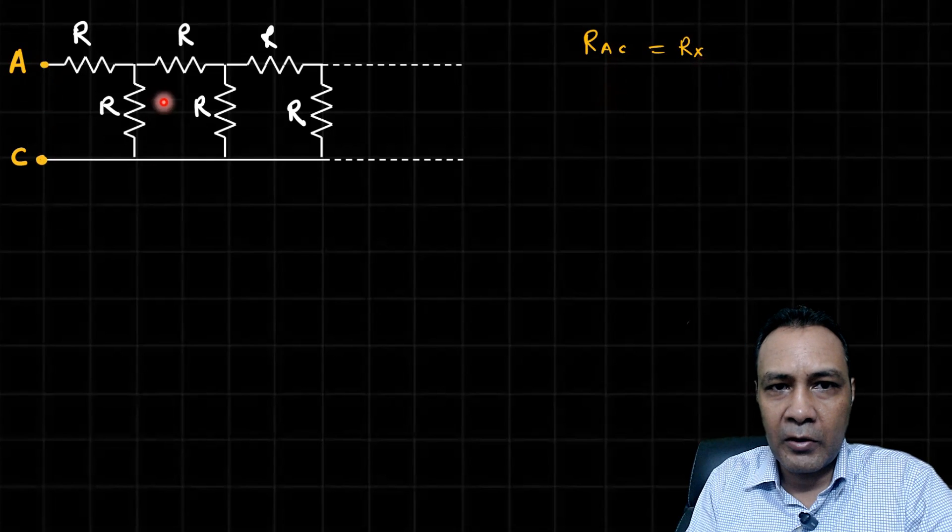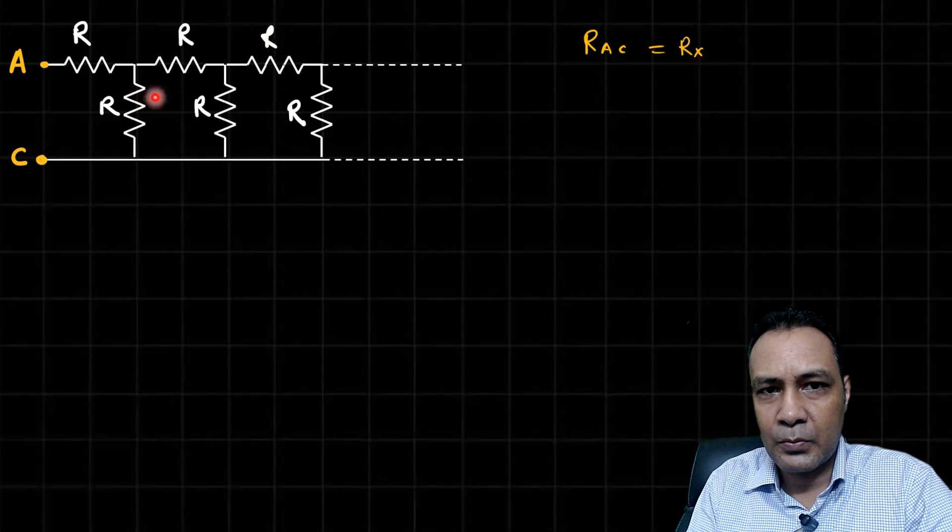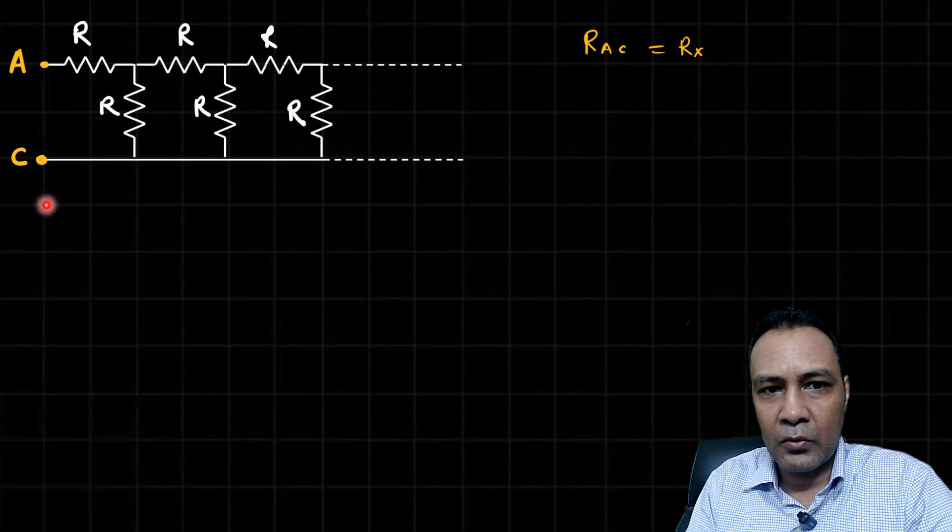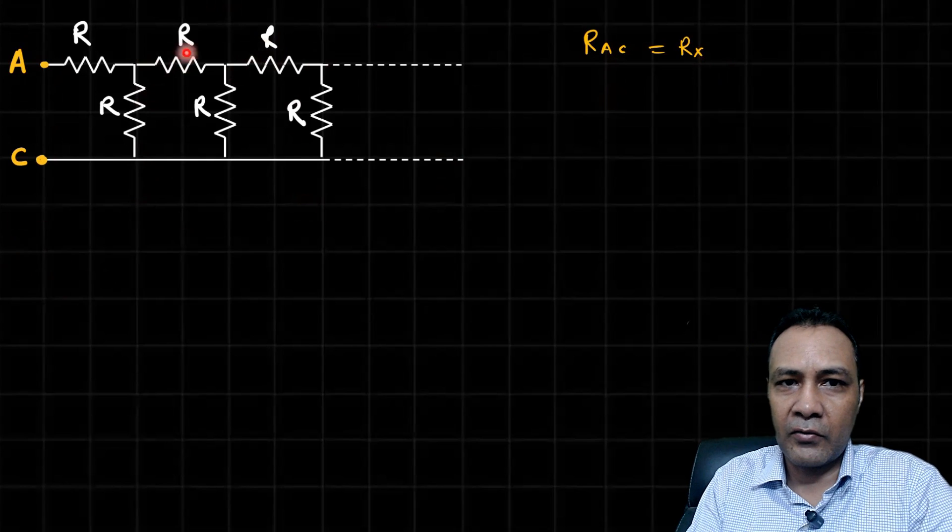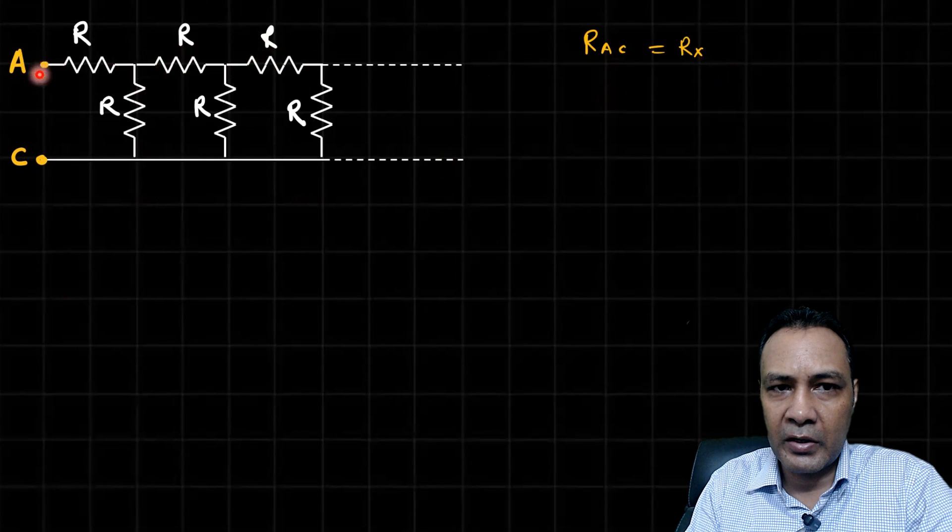That is the part of the ladder between A and C. I assume that R_AC is equal to R_X. This is an infinite ladder. I'm looking from A to C and getting resistance R_X. If I look from here, just look for this part and put it below, you'll see it's identical.